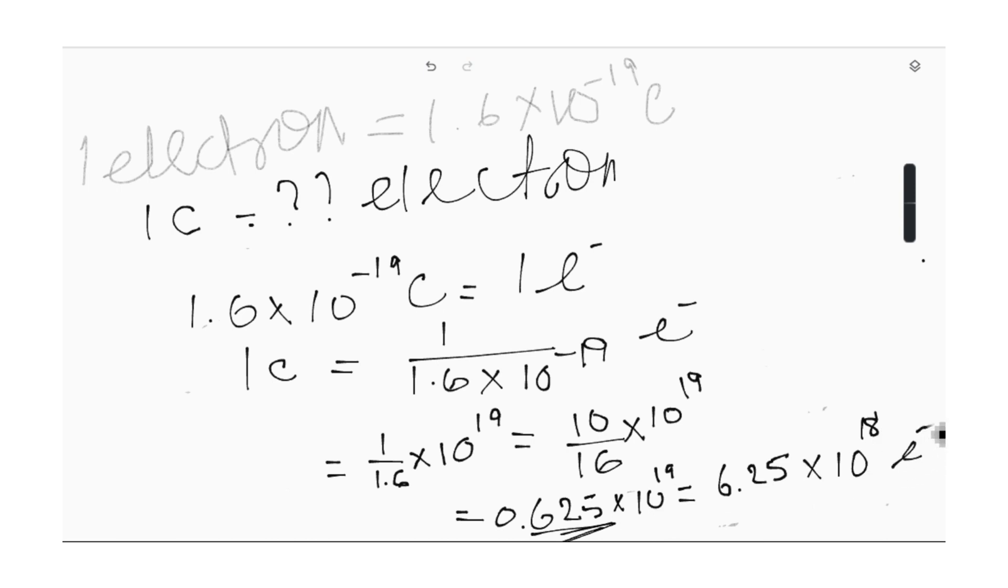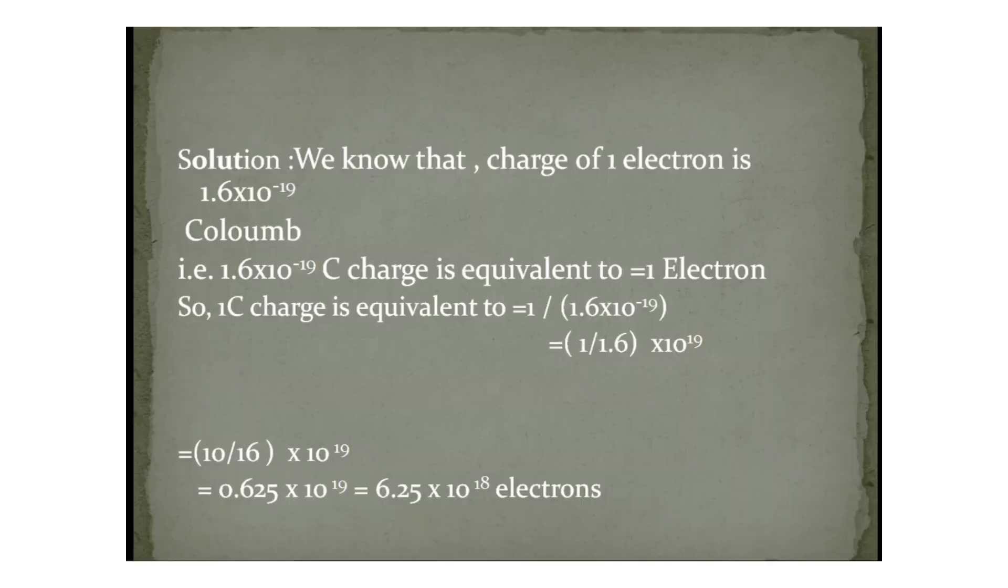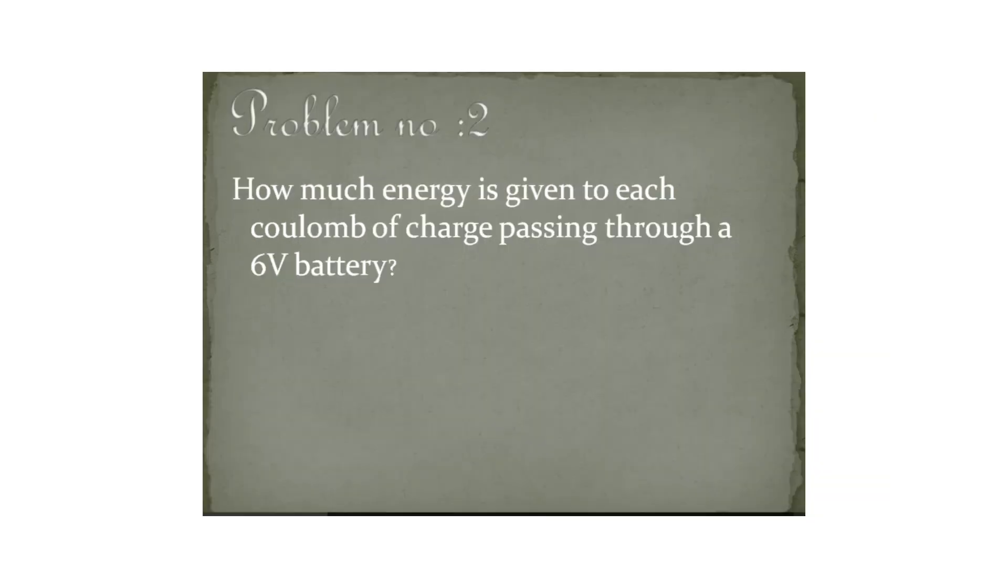So these many electrons. When the charge is 1 coulomb, then the number of electrons is 6.25 into 10 to the power 18 electrons. Now you can note it down from here. So students, I hope you understood the problem. You can note the steps of the solution of this problem from here. Now we have another problem, Problem Number 2.